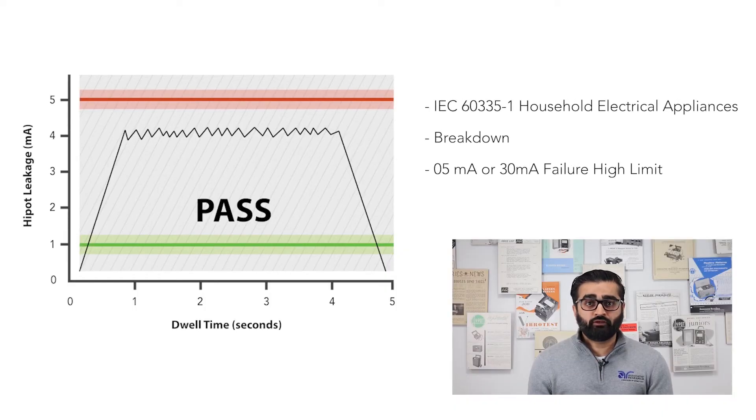For example, during an electric withstand or high pot test, IEC 60335-1 considers a breakdown as any current that exceeds 5mA for appliances or 30mA for appliances with high leakage current.